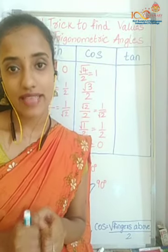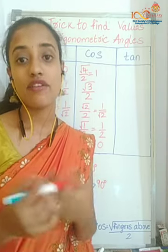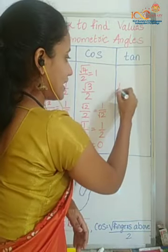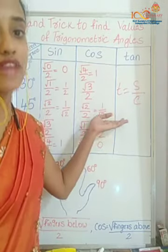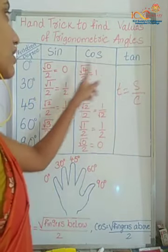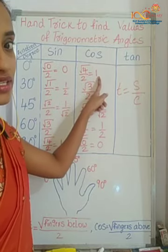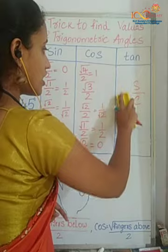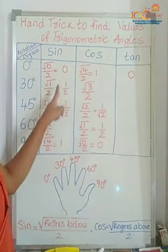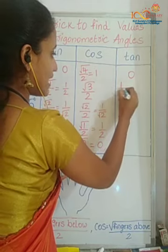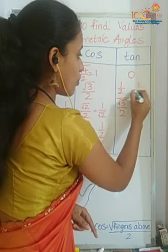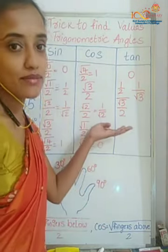Now we have to find the values of tan. The formula for tan using sine and cosine is tan equals sine divided by cosine. So tan 0 equals sine 0 divided by cos 0, which is zero divided by one — that equals zero. Next, tan 30 equals sine 30 divided by cos 30. We can cancel the two in the denominators and the remaining result is one by root three.